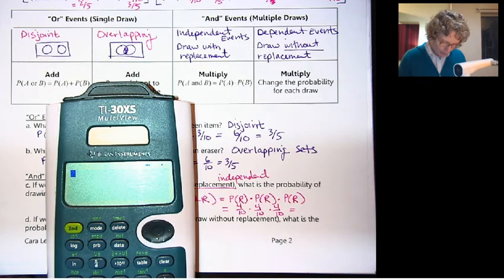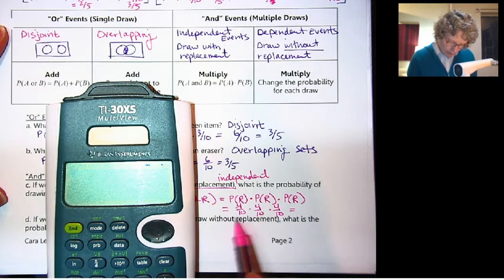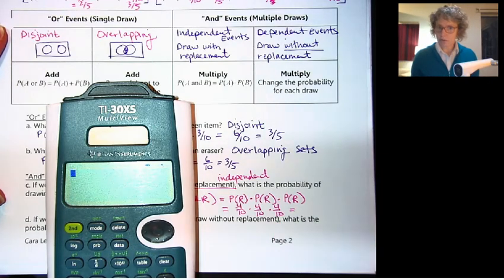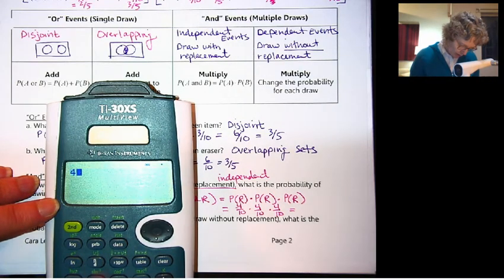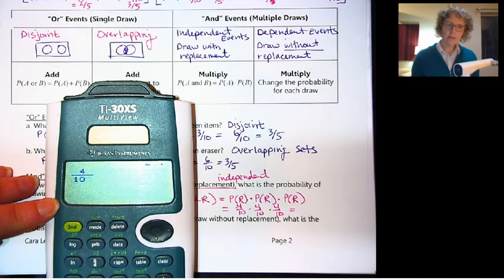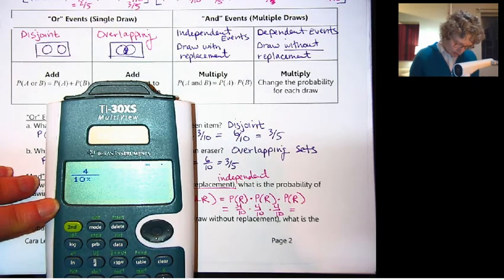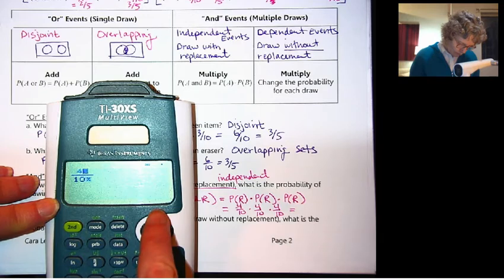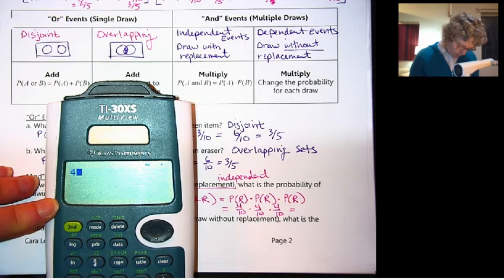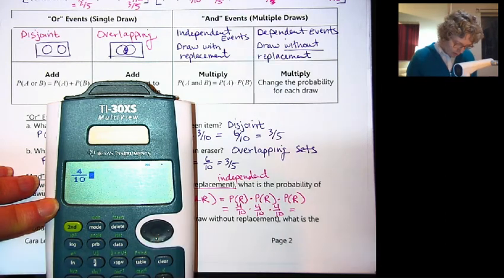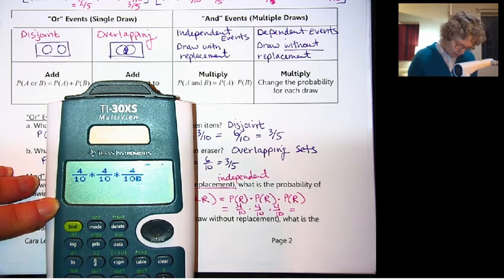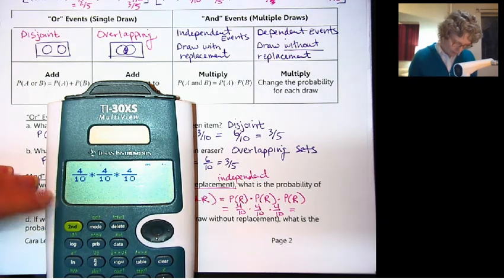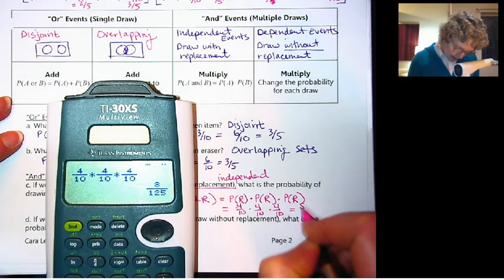I'm going to pause it and get my calculator. Got my calculator here. With fractions you can multiply straight across, or you can use some kind of fraction. So I'll do 4 fraction 10, right arrow, times 4 fraction 10, right arrow, times 4 fraction 10. This calculator will do fractions for us, which is 8 out of 125.